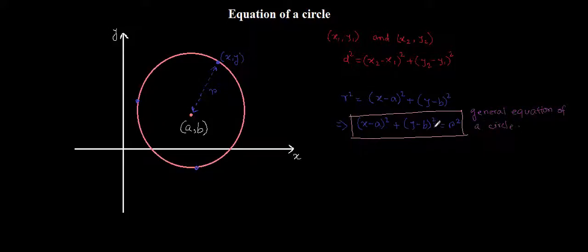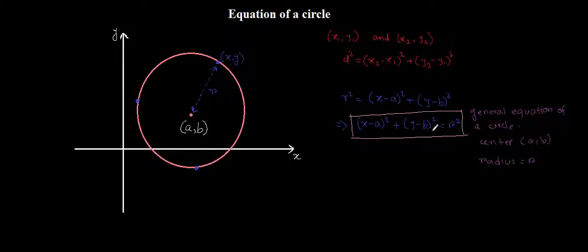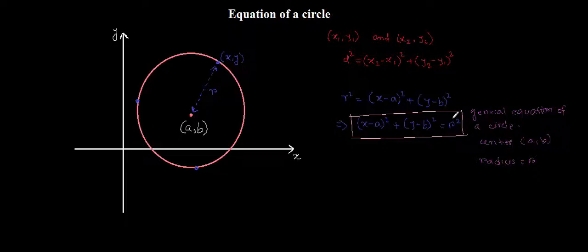For this case, the center has a coordinate of a comma b and the radius is denoted by r. Writing an expression in this form is very easy because we can determine the center coordinate and the radius just by looking at the expression. Any coordinate that satisfies this equation lies on the circumference of a circle. Now let's move on to some example questions.